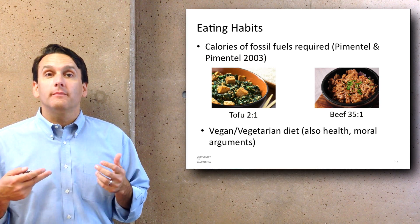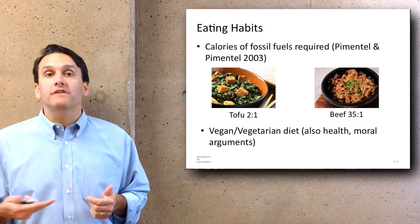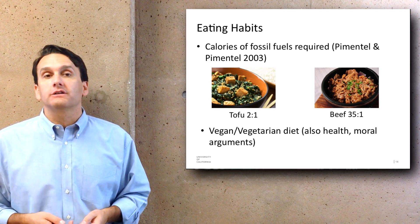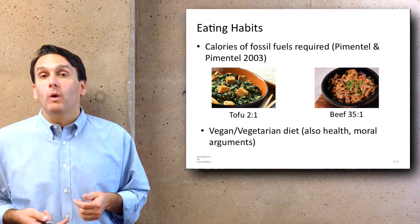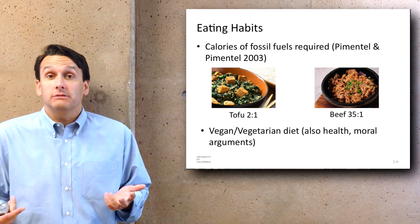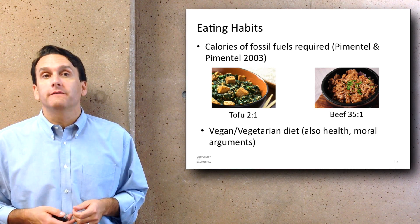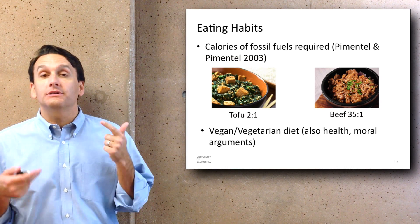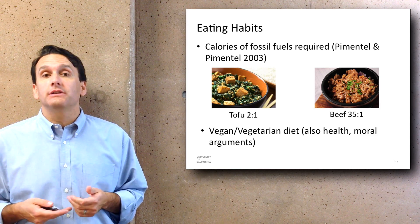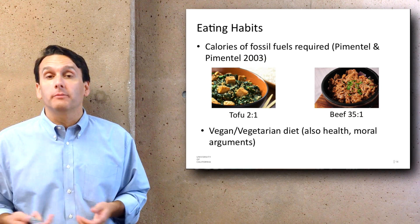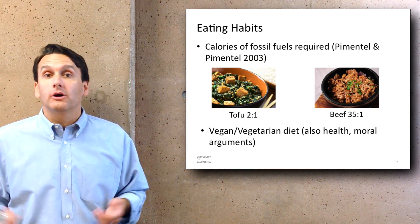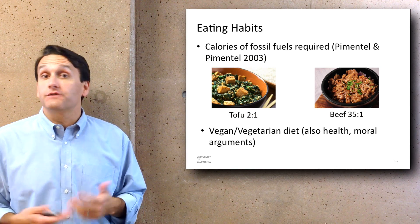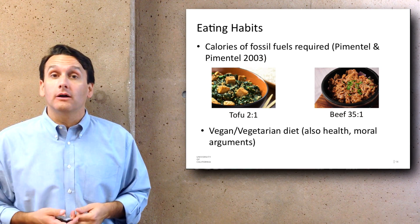Thinking about the calories of fossil fuels used per calorie of protein: with beef it's a 35-to-1 ratio, meaning producing one calorie of beef protein requires 35 calories of fossil fuel. For tofu, the ratio is only 2-to-1. Between the heavy water use and the high energy use for meat production, there's a strong suggestion that a vegan or vegetarian diet might have significant environmental benefits, in addition to health and moral arguments. In previous offerings of this class, a number of students have explored vegan and vegetarian diets for their final projects.